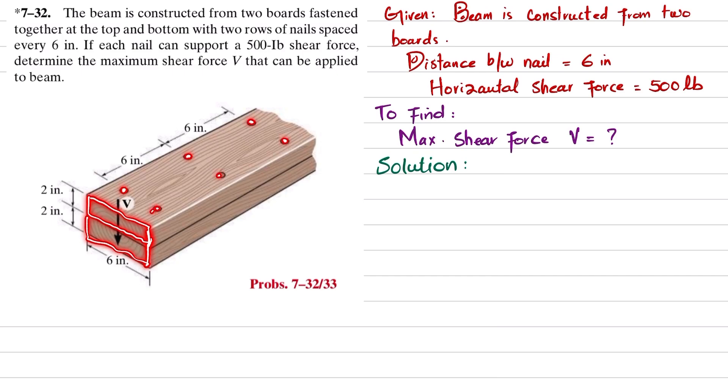There are two rows of nails - one is this row and the other one is this row. The distance between each consecutive nail is six inches, and this nail can withstand a maximum of 500 pounds horizontal shear force.